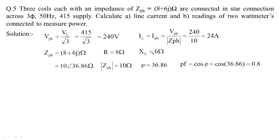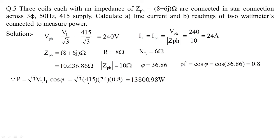For a star-connected network, line current equals phase current: IL = I_phase = V_phase / Z_phase = 240/10 = 24 amperes. The total active power is P = √3 · VL · IL · cos φ = √3 × 415 × 24 × 0.8 = 13800.98 watts. This total power equals W1 + W2 in the two-wattmeter method.